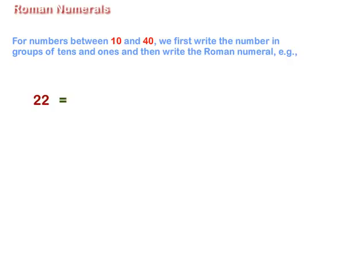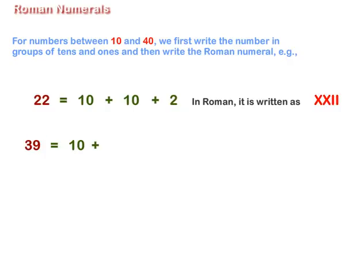Example: 22 is equal to 10 plus 10 plus 2. In Roman, it is written as XXII. 39 is equal to 10 plus 10 plus 10 plus 9. In Roman, it is written as XXXIX.